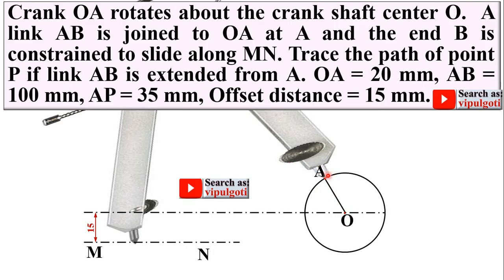Then take the compass and set the radius as the length of the connecting rod. The connecting rod is given as AB equal to 100 mm. So you can draw the arc and locate point B.